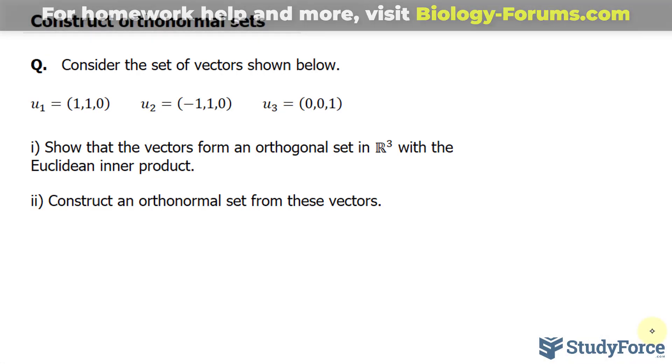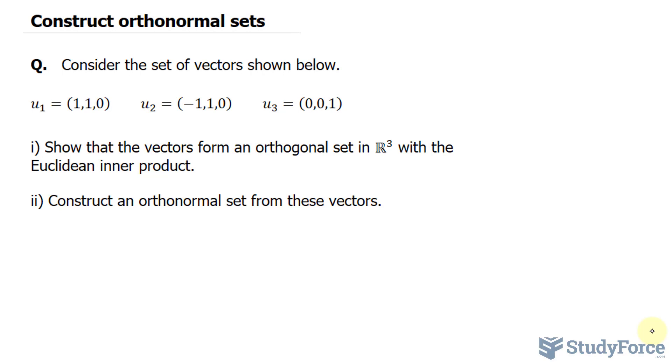To show that all of these are orthonormal, we have to find the inner product of the vectors u₁ and u₂ and show that it is equal to zero. Also, u₁ and u₃, show that it is equal to zero. And u₂ and u₃, its inner product is equal to zero.